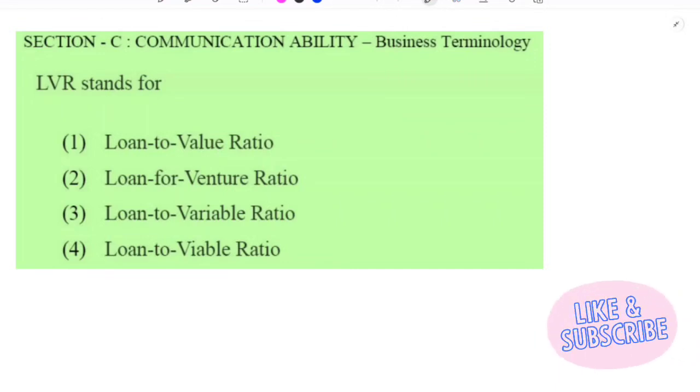They will assess whether giving this loan to a particular person or organization is beneficial or not. That assessment is known as LVR, loan to value ratio. That means when you go to a bank and say I need 50 lakhs loan, they will not give like this. They will assess whether giving to you the mortgage or loan is beneficial to the bank or whether they can require or not. That is what loan to value ratio.